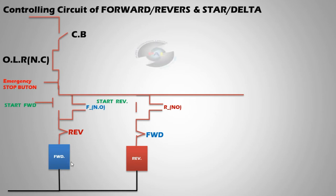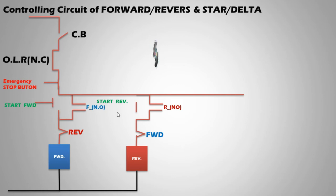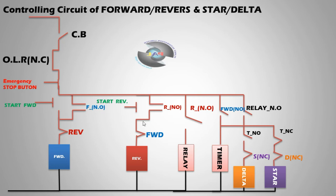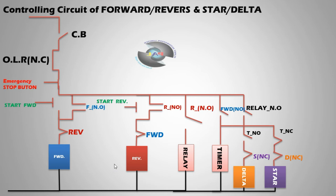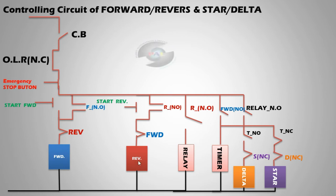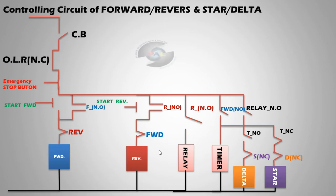When we stop the forward, we can go to reverse. When we want to start reverse, we press button number three. This is the main operation: forward, reverse, and star-delta running. When forward is running, the motor runs forward. When the emergency stop button is pressed, reverse is also stopped.